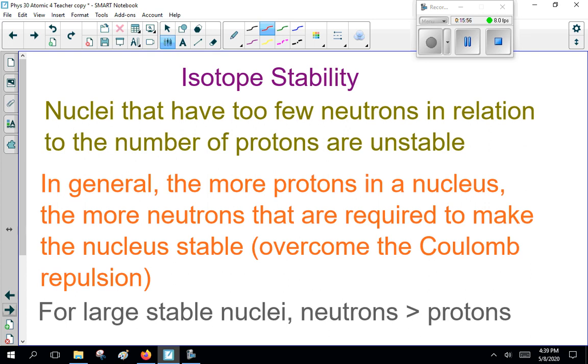Now, here getting into newish stuff. Nuclei that have isotope stability. Nuclei that have too few neutrons in relation to the number of protons are unstable. In general, the more protons in the nucleus, the more neutrons that are required to make the nucleus stable to overcome what we call Coulomb repulsion. Now, what you have to remember here, for large stable nuclei, we need more neutrons than protons.